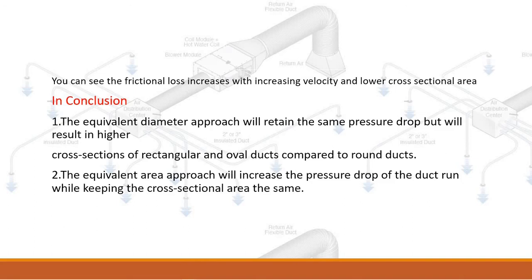In conclusion: one, the equivalent diameter approach will retain the same pressure drop but will result in higher cross-sections of rectangular and oval ducts compared to round ducts. Two, the equivalent area approach will increase the pressure drop of the duct run while keeping the cross-sectional area the same.